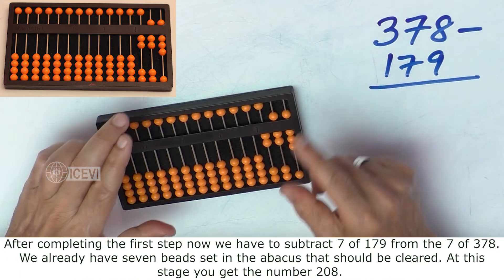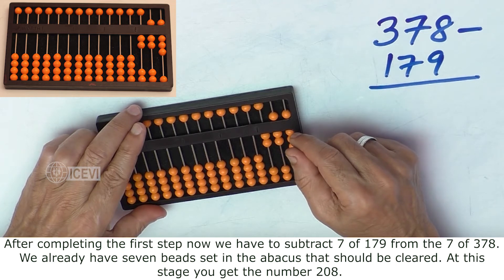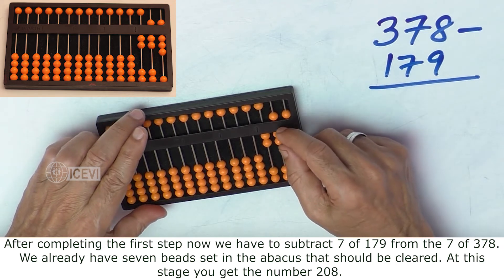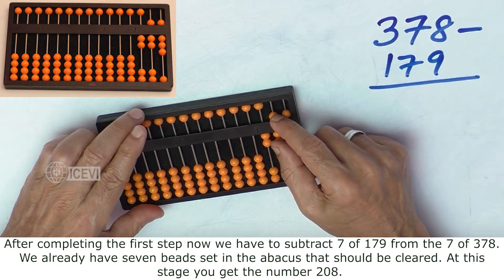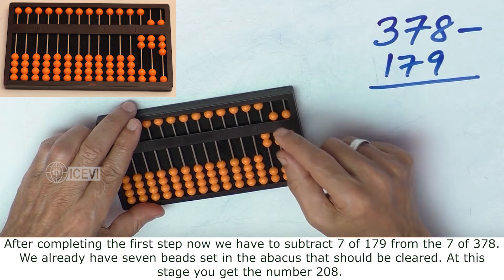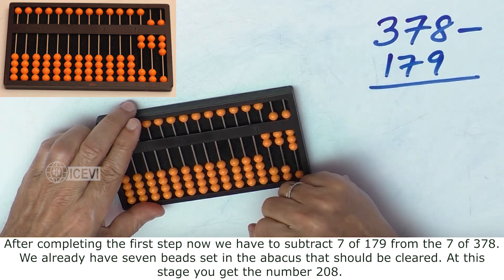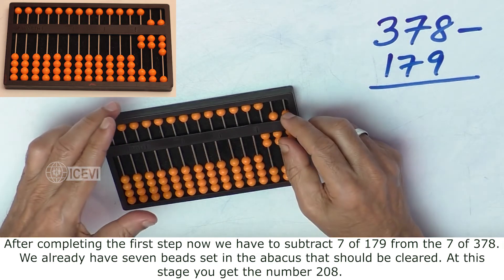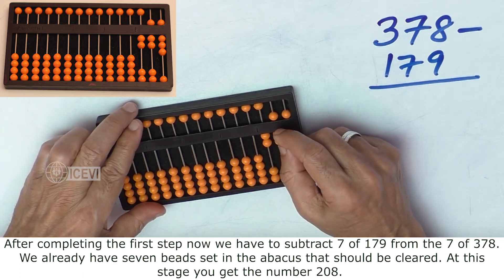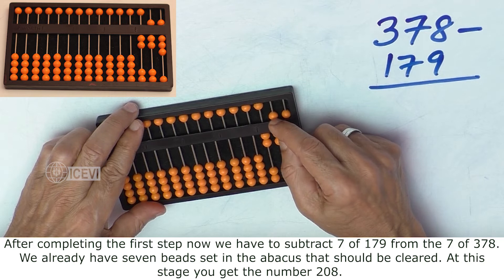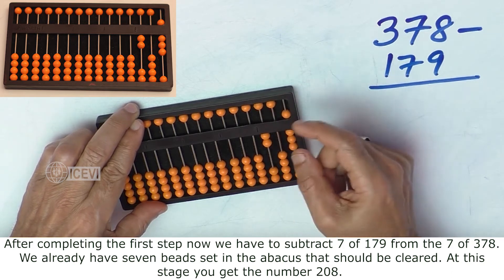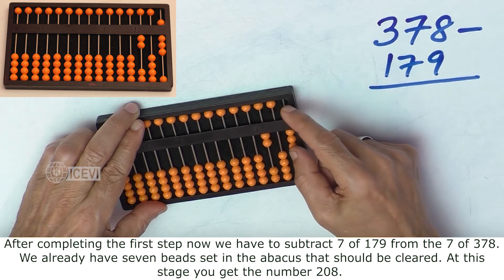After completing the first step, now we have to subtract 7 of 179 from 7 of 378. We already have 7 beads set in the abacus that should be cleared. At this stage you have the number 208.